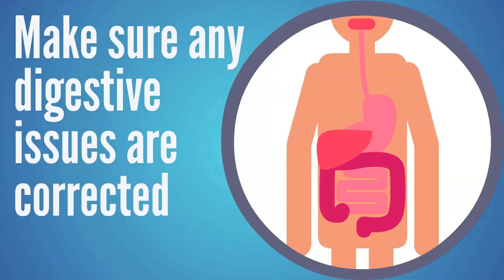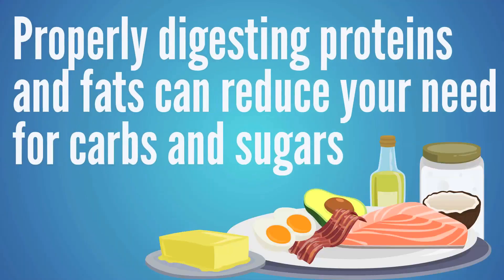A second important factor when it comes to improving an anabolic imbalance is making sure that any digestive malfunctions are corrected, because a lot of people have gravitated towards consuming more carbs and sugars because they can't break down proteins and fats correctly. We have a lot of videos on different forms of digestive symptoms and issues and ways to correct those problems. So if you're dealing with any digestive symptoms at all, check out our videos page to see which symptoms we've covered. If a person can improve their ability to properly process proteins and fats, then they reduce their need for carbohydrates and sugars.